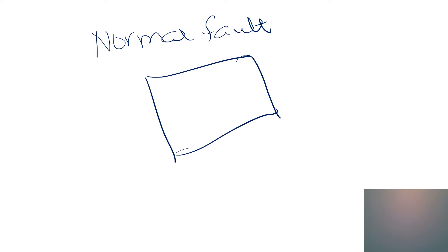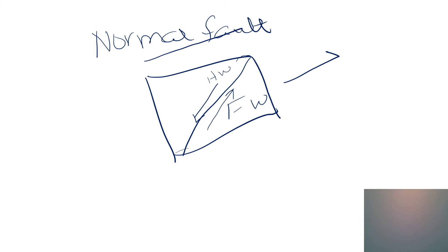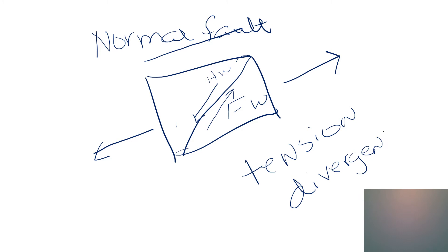In this one we've got a hanging wall up here, but the arrows show us that the hanging wall has moved down — here's the foot wall. The hanging wall has moved down in relation to the foot wall; that is the very definition of a normal fault. It happens when the earth's crust is pulled apart and breaks, so the force is tension, and the commonly associated plate boundary would be a divergent plate boundary.